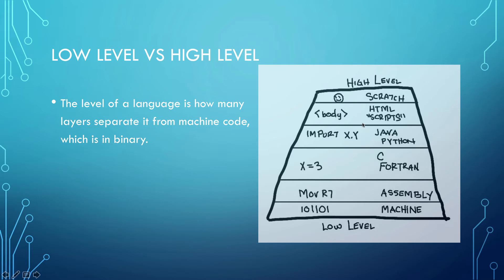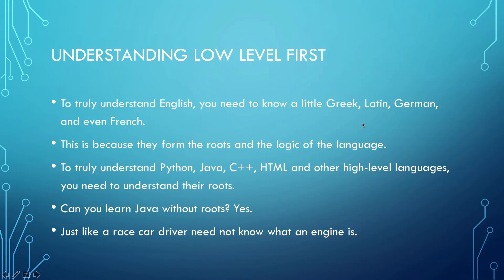To understand low level is critically important because, just like in other things — if you truly want to understand English, you should learn a little bit about Greek, Latin, German, and French, because English is actually made up of those languages. Same thing: to understand Python, Java, C++, and HTML and other high level languages, you have to understand where these languages came from. And the languages that make them are assembly and the low level languages.